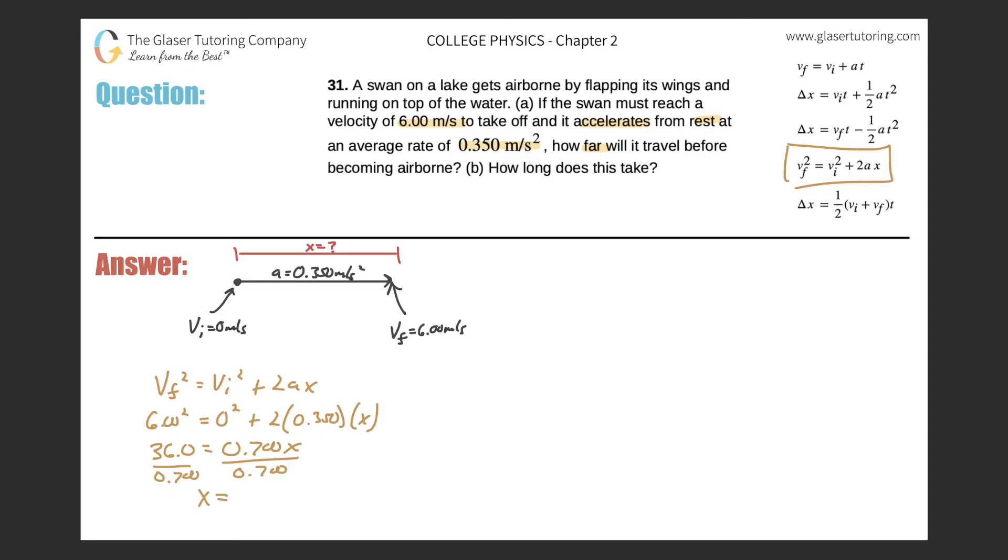So my displacement here should be, let's take out the calculator. So it's 36 divided by 0.7. So it comes out to about 51.4. So we've got 51.4 meters.